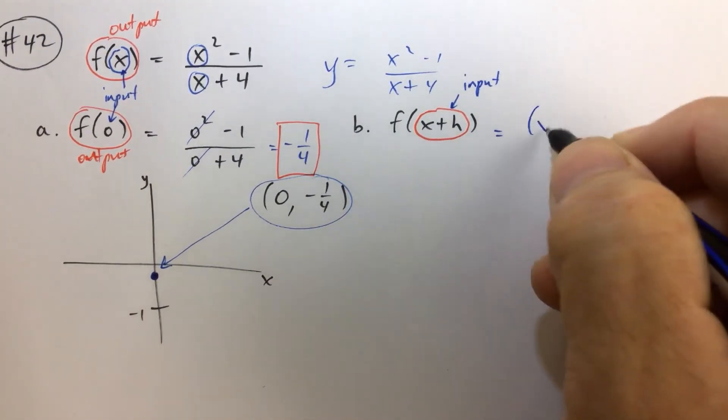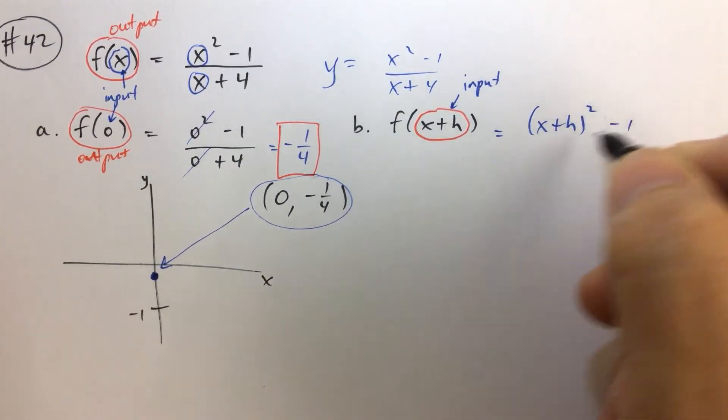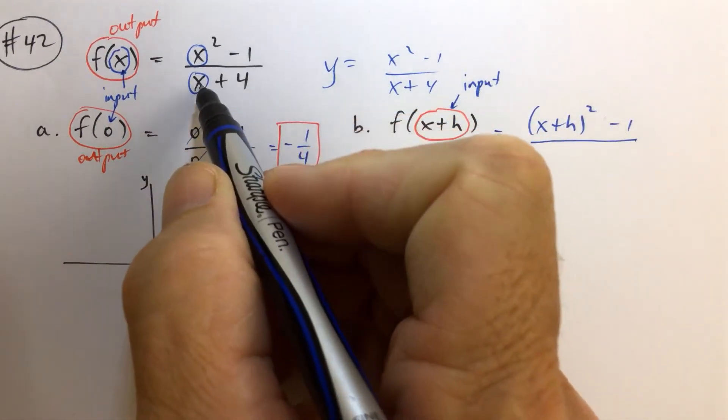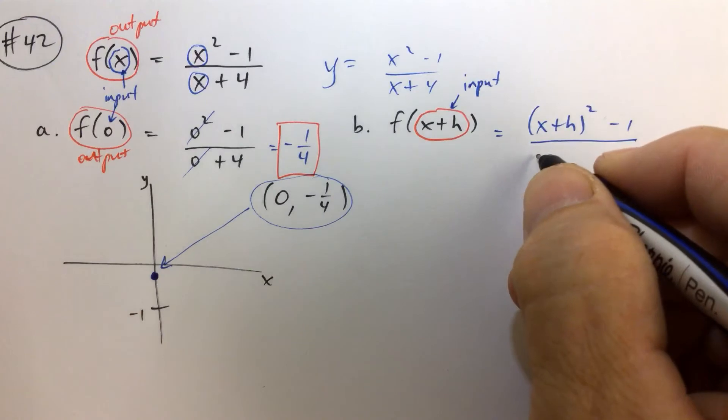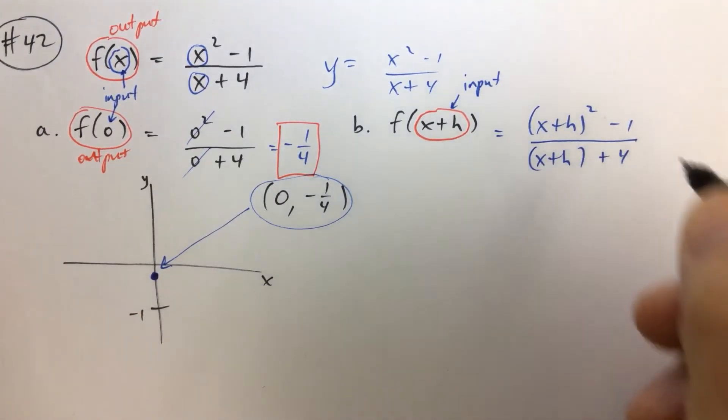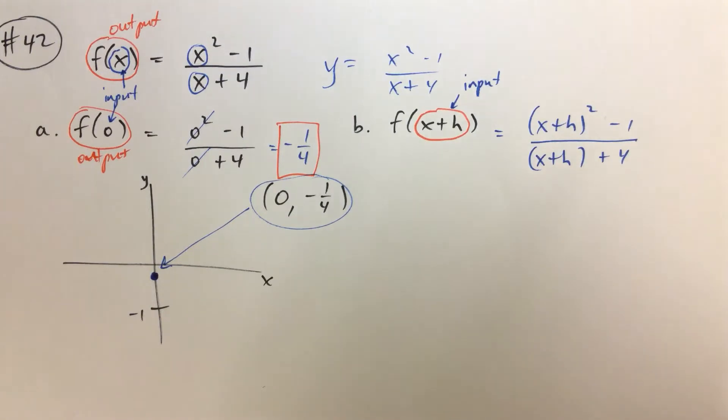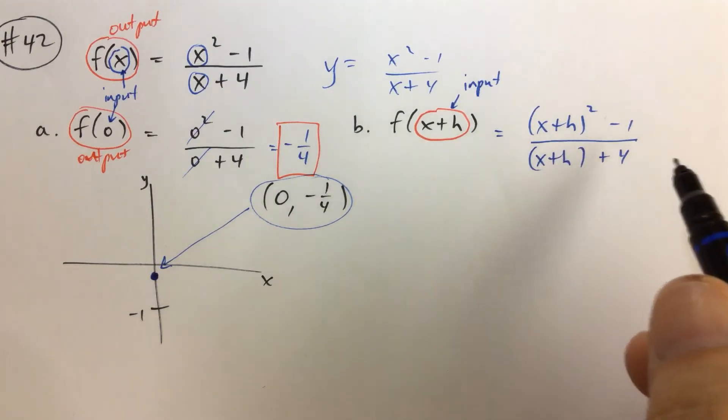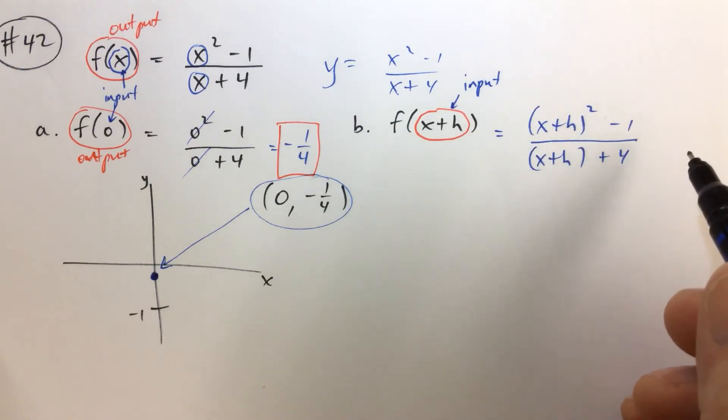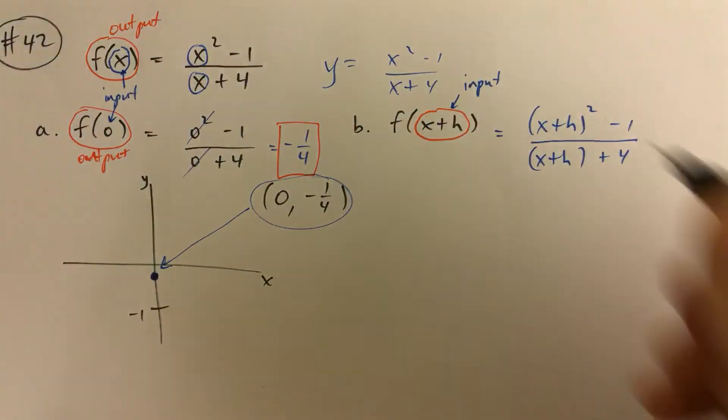And it says you're going to square it. The input squared minus 1 all over. And it says you're also supposed to put the input down there. x plus h plus 4. So for the time being, we're just going to leave that alone. And we could multiply it out if we wanted to, but we're going to go ahead and leave it alone.